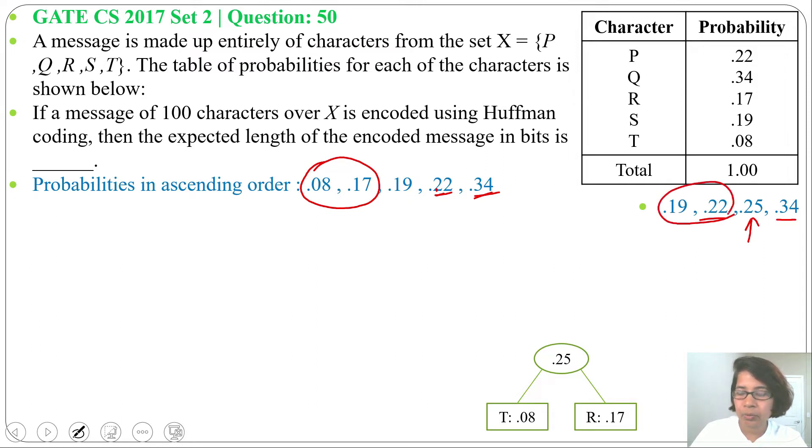Next, I will add these two, 0.19 and 0.22. These two are before 0.25, so these two will be on the left side. I will add 0.19 and 0.22. The sum is 0.41.